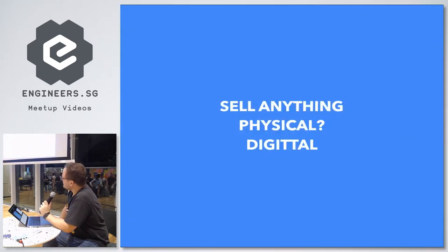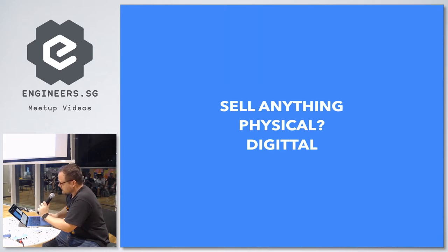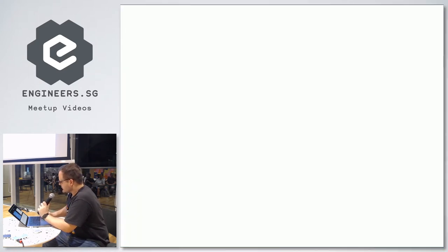At the moment WooCommerce can handle both physical and digital products, and it has over 53 million downloads and powers over 28% of all online stores, so it's a pretty big provider in that market. WooCommerce, just like any other plugin, is really easy to install into your WordPress site.